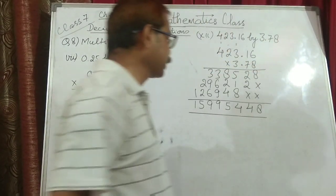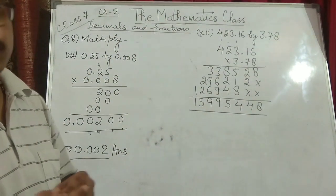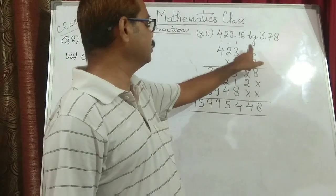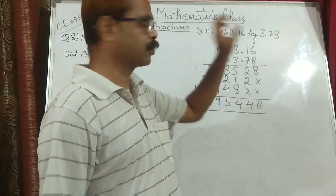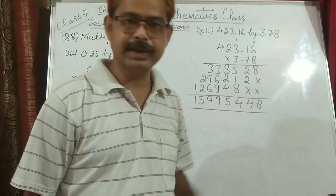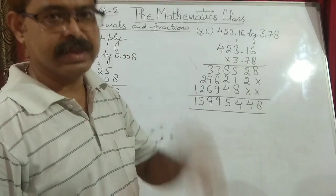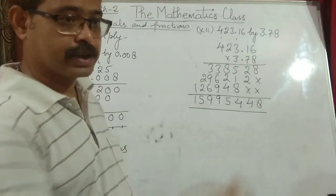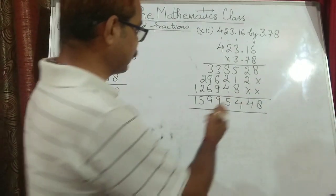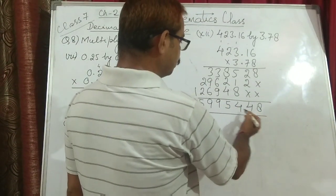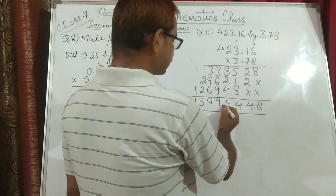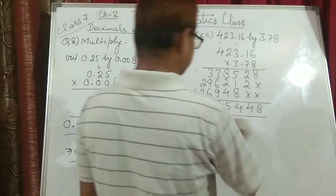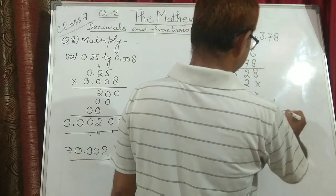Now this is the multiplication process — we add all the partial products. Now where to put the decimal? We count the total number of decimal places: 1, 2, 3, 4 total digits after the decimal across both numbers. So the decimal will come after 4 digits from the right towards the left. This is the final value.